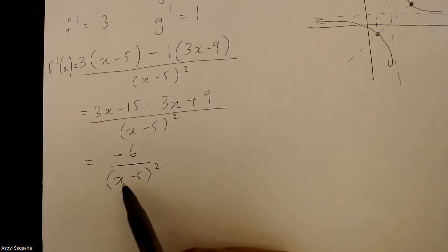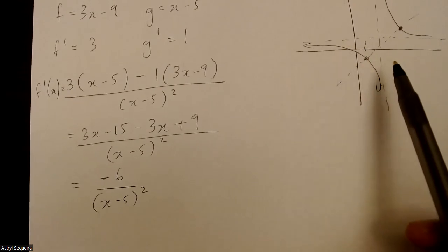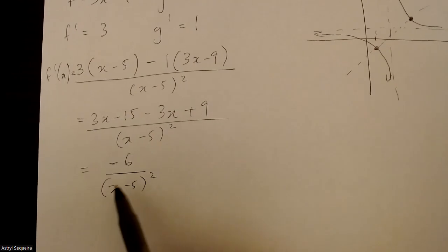The next thing I want to do is I want to find my slope of my tangent line at this point over here. So to find the slope of my tangent line at this point here, I'm going to sub in x as 1.